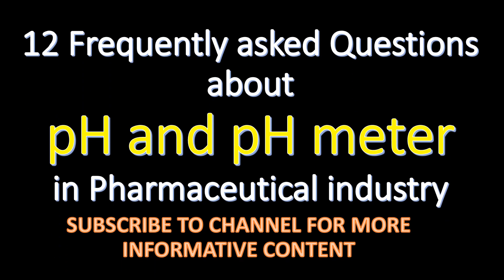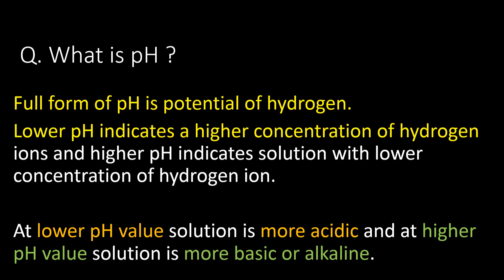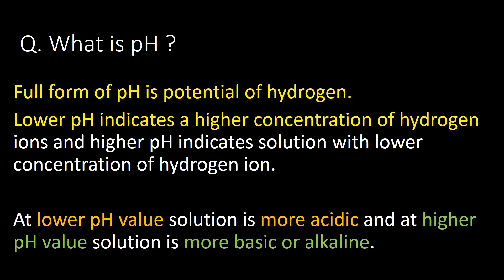Welcome. Here are the 12 frequently asked questions about pH and pH meters in the pharmaceutical industry. The first very basic question is: what is pH? The full form of pH is 'potential of hydrogen.'